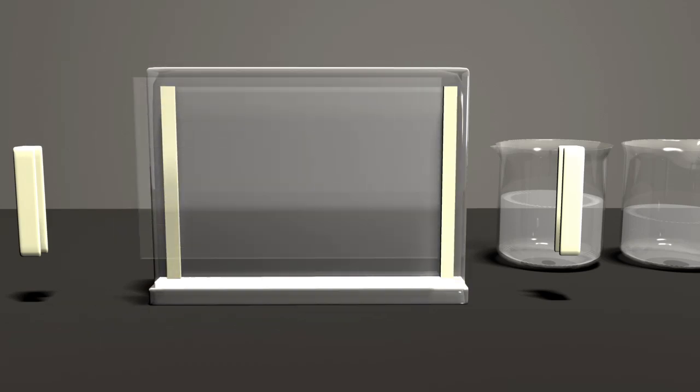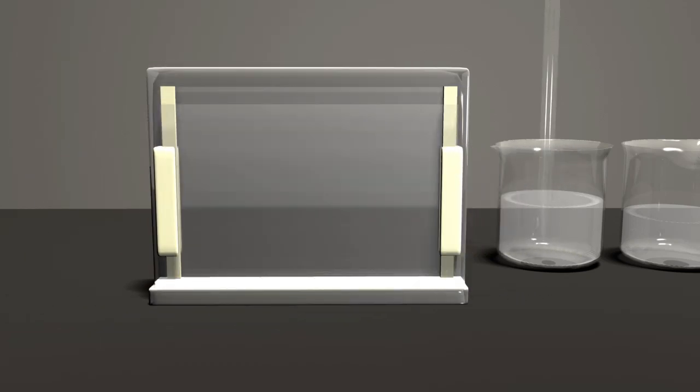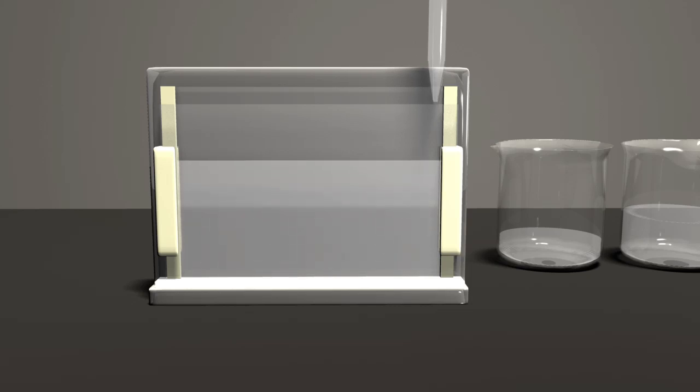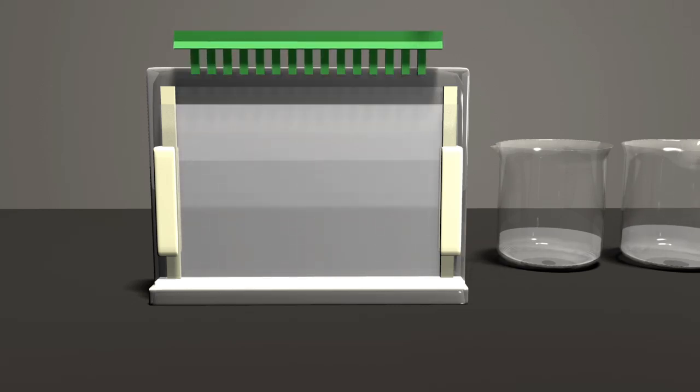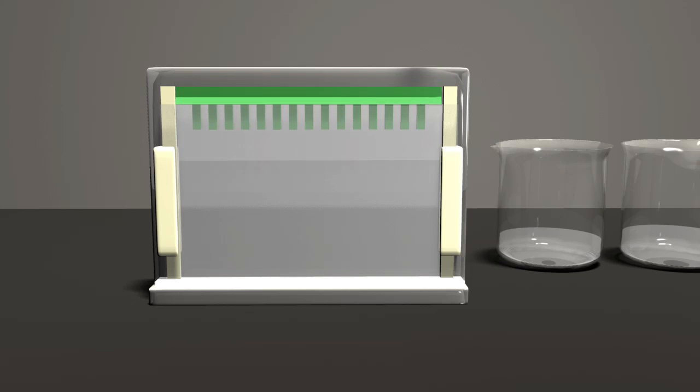In PAGE, the gel solution containing the acrylamide compounds, catalyst and polymerizing agent is prepared and quickly poured between two plates anchored vertically in a cassette. A small plastic comb is placed at the top to create wells where the protein lysates can be loaded. As the liquid solution hardens, a flexible, thin gel forms between the glass plates.